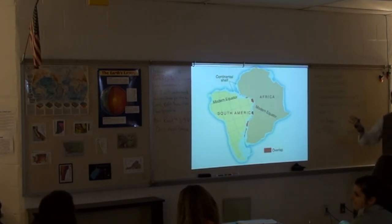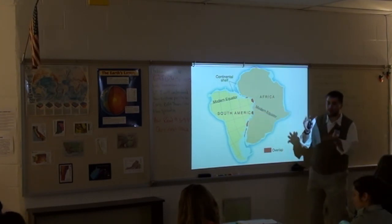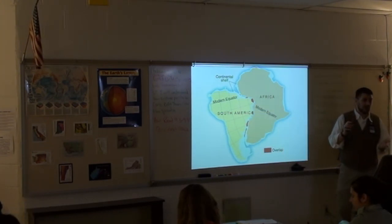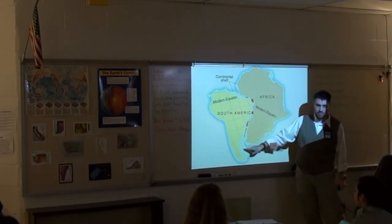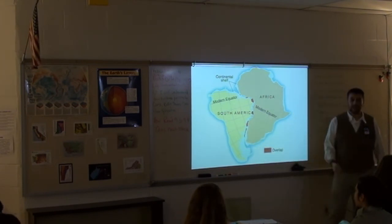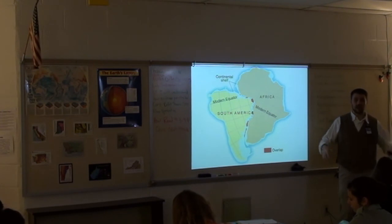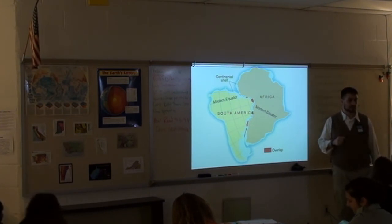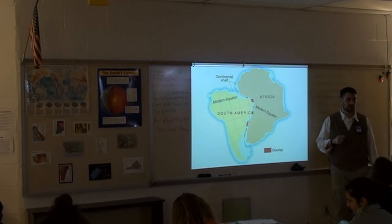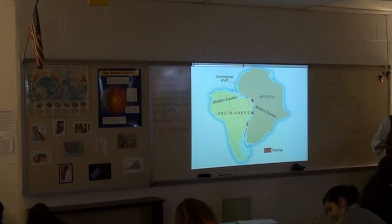Here we have Africa and South America. If you put them back together, they fit really well. You might notice there's a light blue section — that is the continental shelf. Write this in your notes: the continental shelf is the area of the continental crust that's underwater. Continental shelf is continental crust underwater.